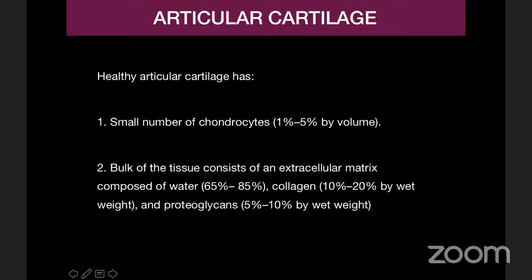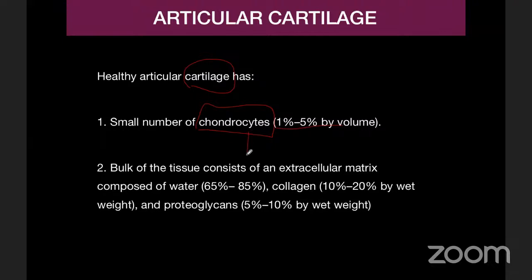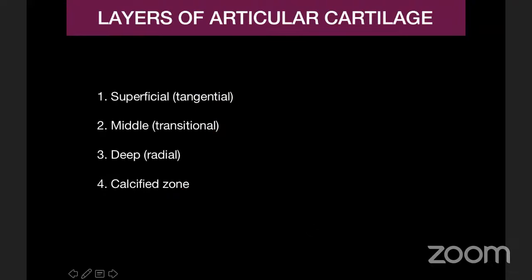Joints are lined by hyaline articular cartilage. Articular cartilage is composed of chondrocytes, which account for only 1 to 5% of the volume. The bulk of the tissue is the extracellular matrix, which is composed of water, collagen, and proteoglycans in specific percentages. This composition determines the appearance of articular cartilage on imaging.